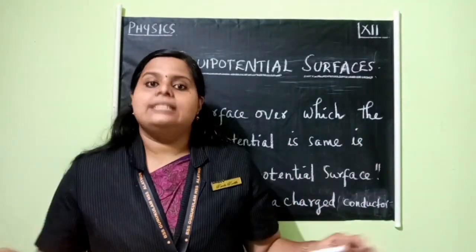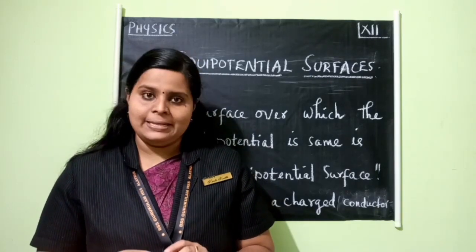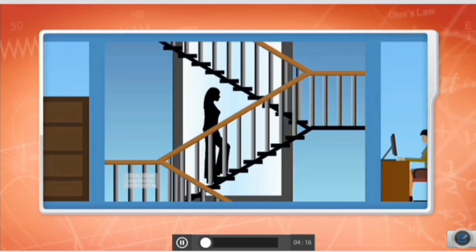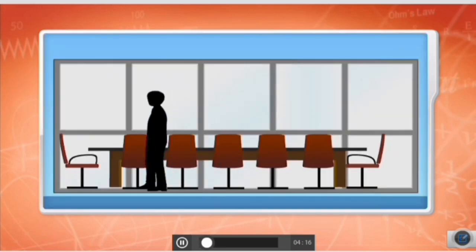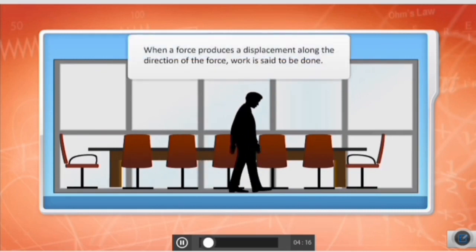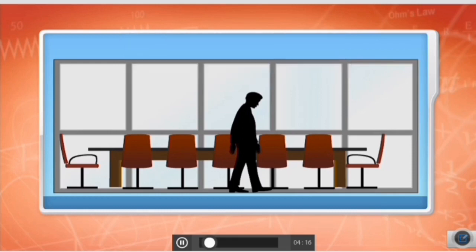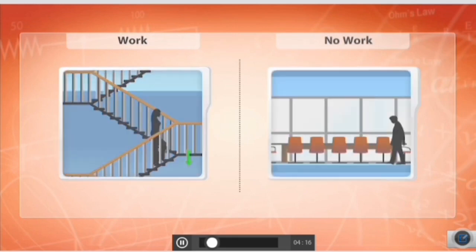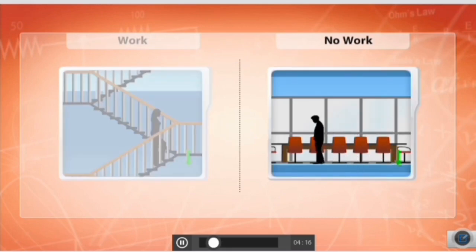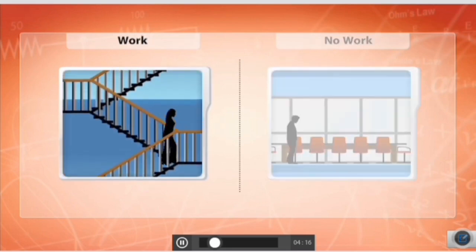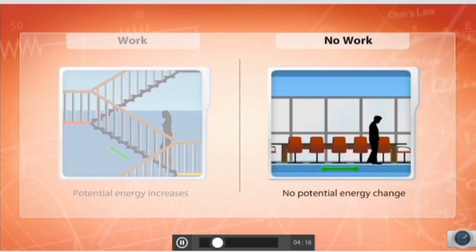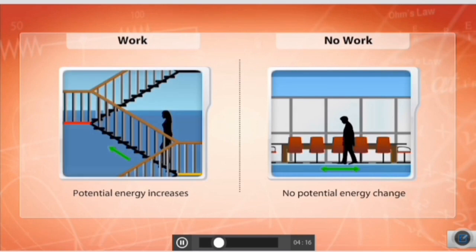The surface over which the electric potential is the same is called an equipotential surface. Now consider: Raki is climbing up the stairs and Vishal is walking on the office floor. According to the definition of work, when a force produces a displacement along the direction of force, work is said to be done. As Raki is climbing up against the force of gravity, she is doing work. But Vishal is moving on the same surface, so no work is done against gravity. As Raki climbs to a higher potential energy level, her potential energy increases, while Vishal's potential energy stays the same.